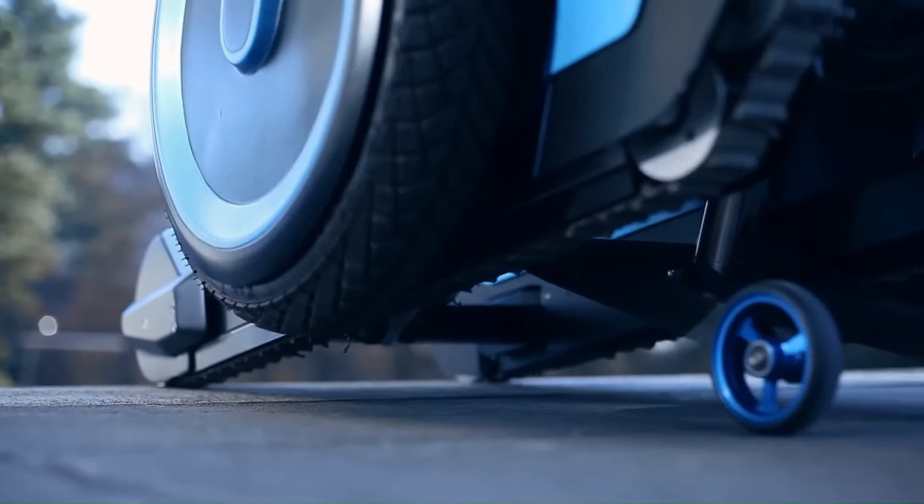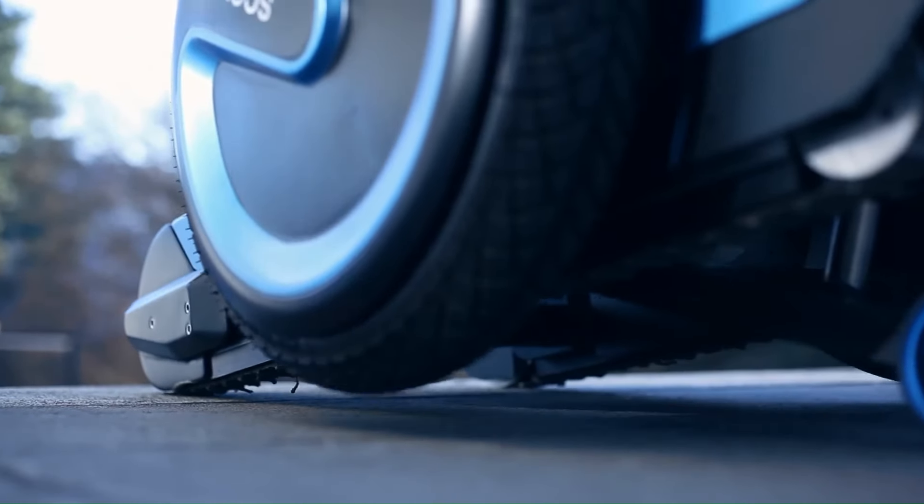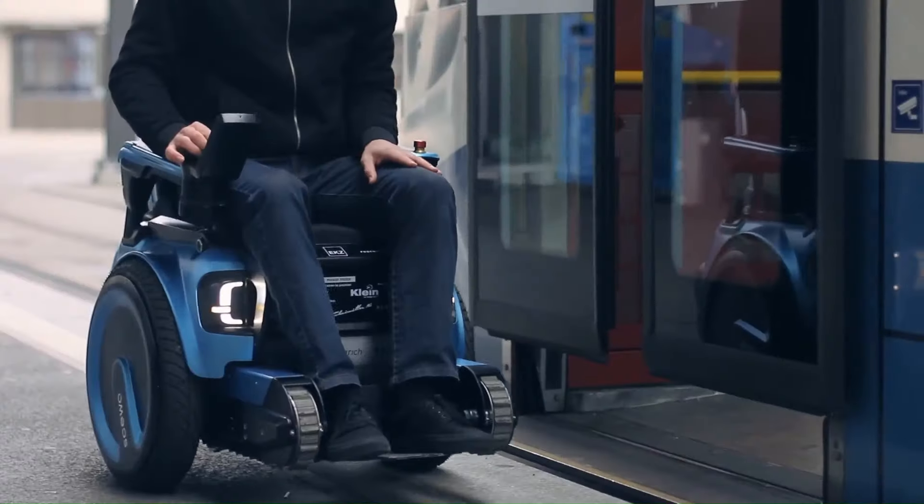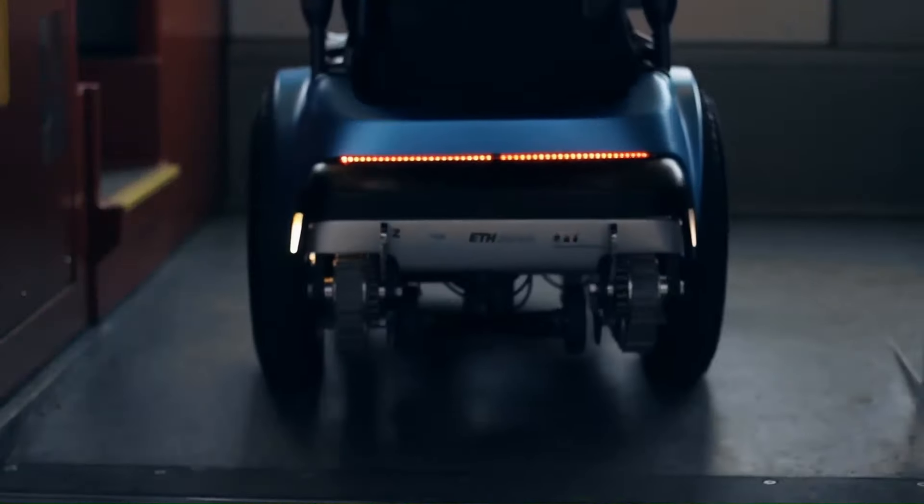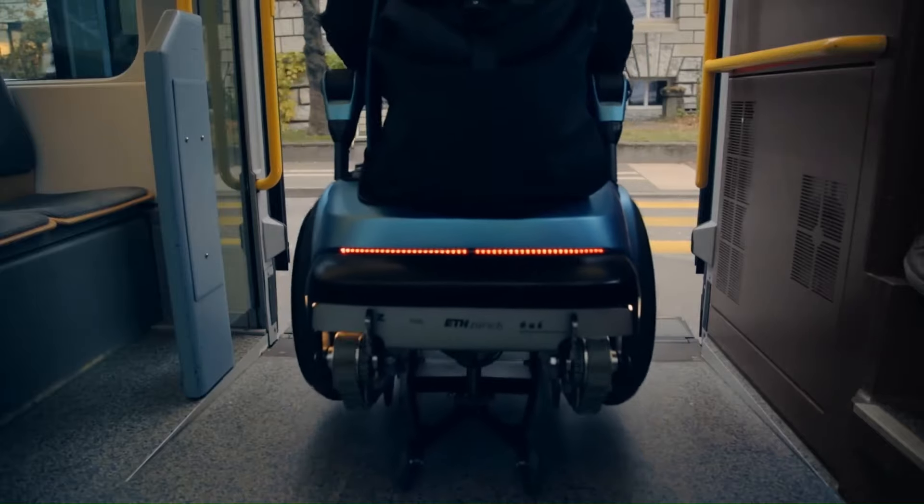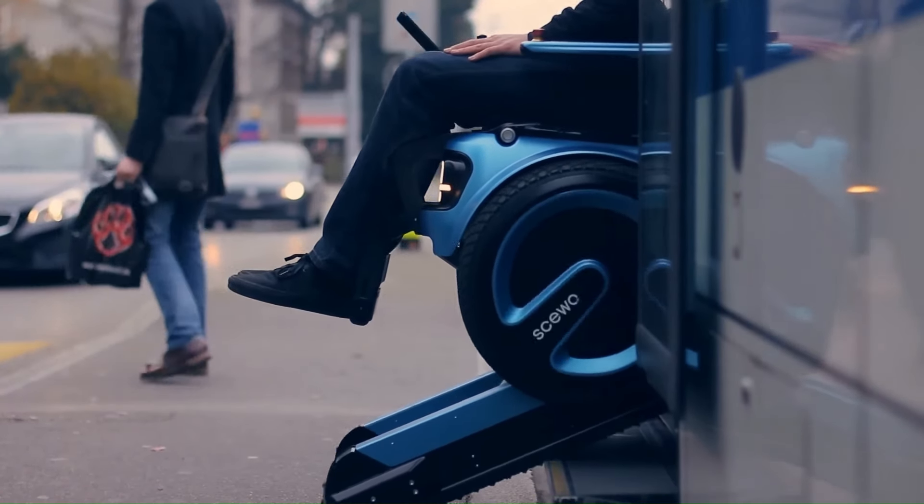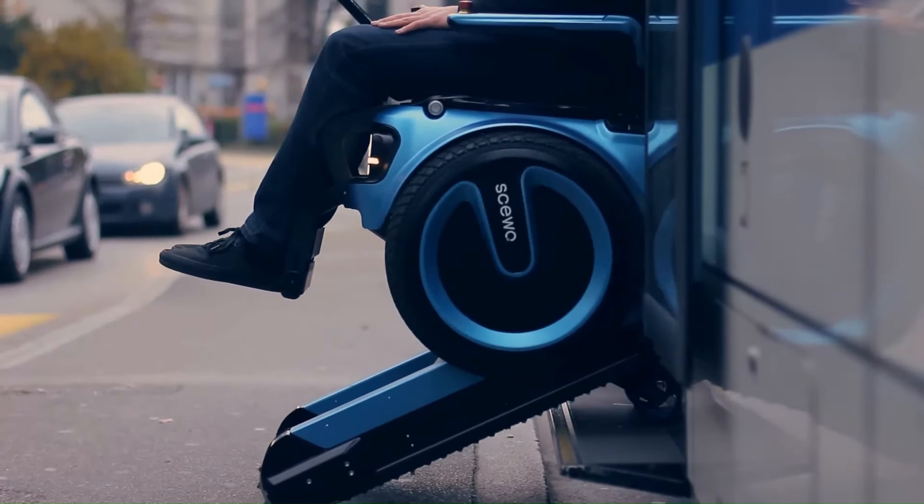Maneuverability. The Suo BRO is very maneuverable thanks to its two large wheels. It can easily navigate tight spaces and uneven terrain.